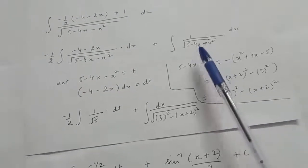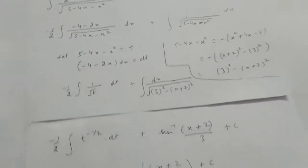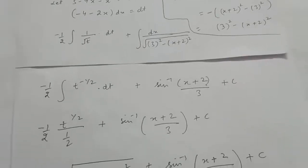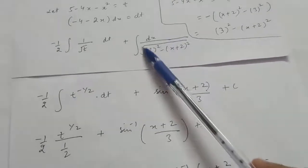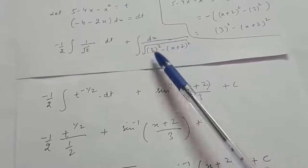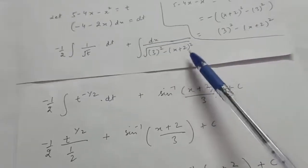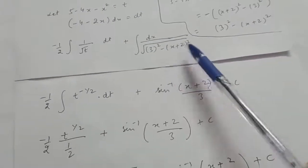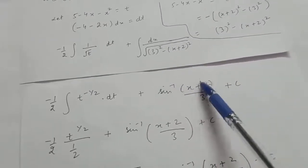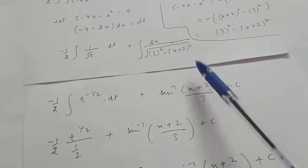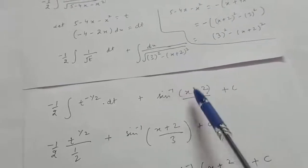For the second integral, rewrite 5 minus 4x minus x² as 3² minus (x + 2)². The first integral becomes (minus 1/2) integral of t^(minus 1/2) dt, and the second is integral of 1/√(3² minus (x+2)²) dx, which equals sine inverse ((x+2)/3) plus c.